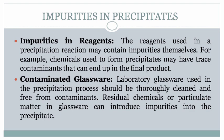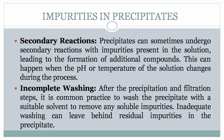Second, impurities in reagents. The reagents used in a precipitation reaction may contain impurities themselves. For example, chemicals used to form precipitates may have trace contaminants that can end up in the final product. Third, contaminated glassware. Laboratory glassware used in the precipitation process should be thoroughly cleaned and free from contaminants. Residual chemicals or particulate matter in glassware can introduce impurities into the precipitate. Fourth, secondary reactions. Precipitates can sometimes undergo secondary reactions with impurities present in the solution, leading to the formation of additional compounds. This can happen when the pH or temperature of the solution changes during the process.